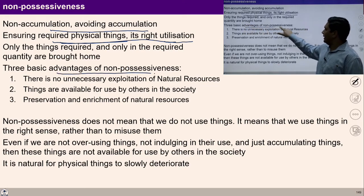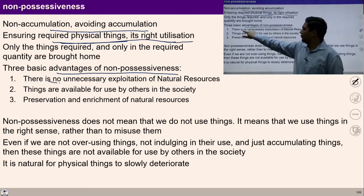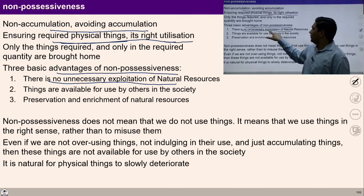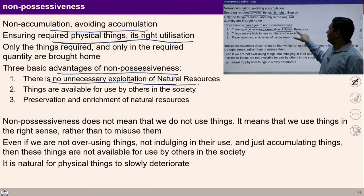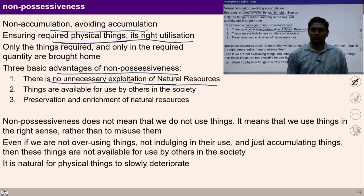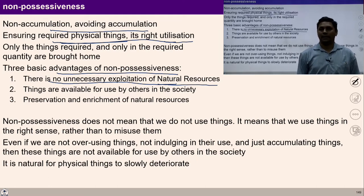There are three advantages of non-accumulation, non-possessiveness. The first advantage is that we avoid exploitation of natural resources. Under the mindset of accumulation, all the facilities we produce and collect unnecessarily come from the rest of nature. Whatever physical facilities and materialistic things are around you are coming basically from nature.